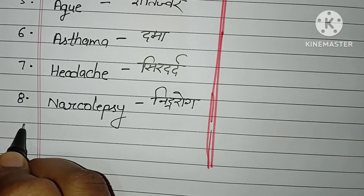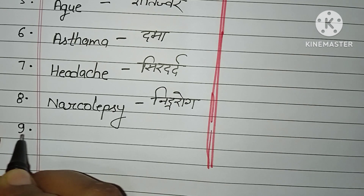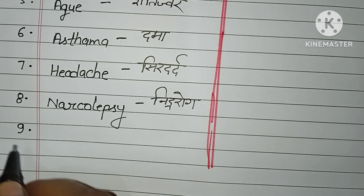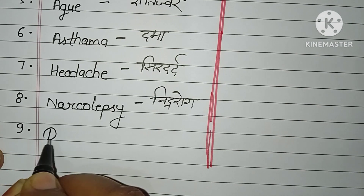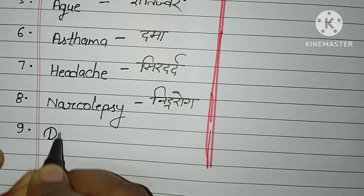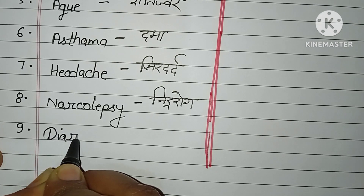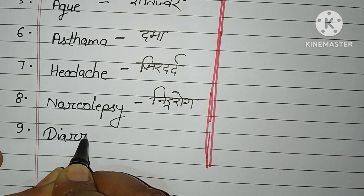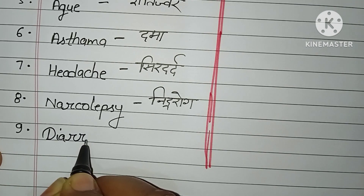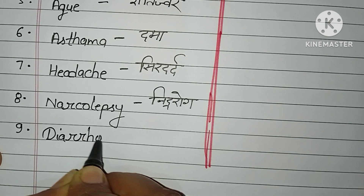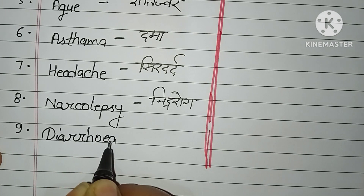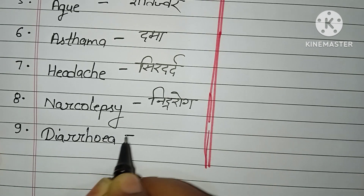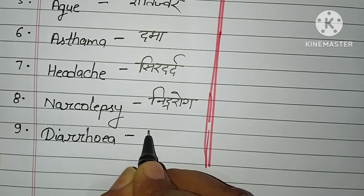Number nine: diarrhea. D-I-A-R-R-H-O-E-A. Diarrhea. Atisar.